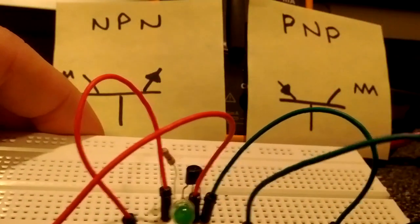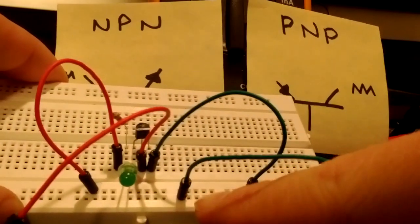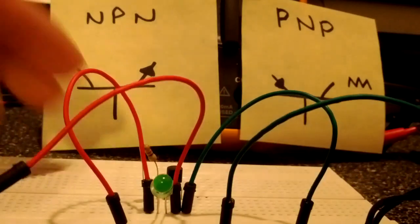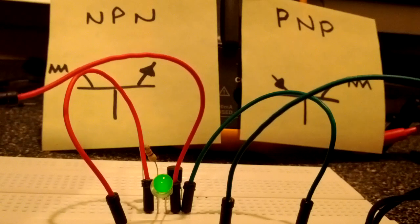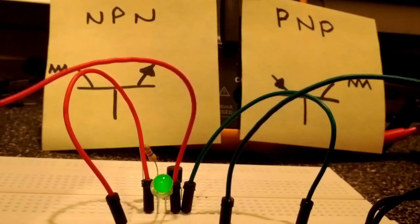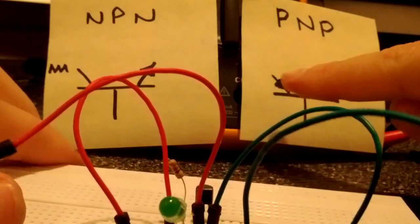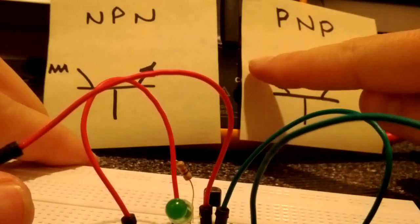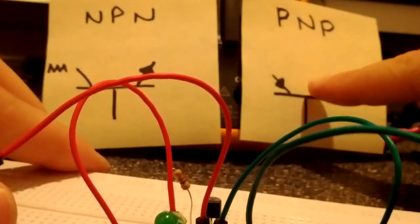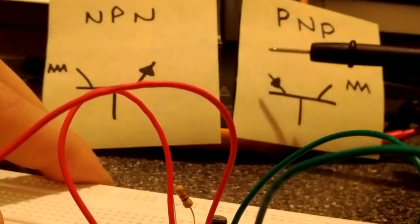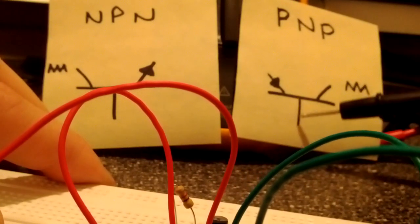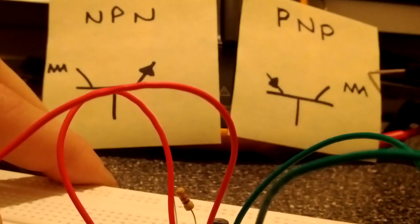So now the load is downstream and I'm using a ground signal to source it, or to sink. So I hold this. Again, it's lighting up. And it's doing the same thing, where current is flowing from the positive down into the base. And it's the current flow from here to here which allows current to flow from here to here.